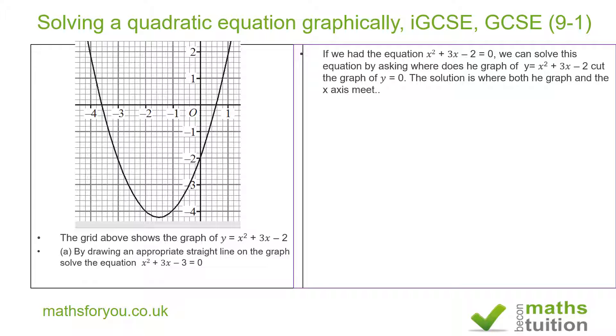But in this case, we are asked to solve the equation x squared plus 3x minus 3 is equal to 0. So we want to get from this to that. So what we then do is to add 1 to both sides because this is an equation. We need to add 1 to both sides because minus 3 plus 1 will give us minus 2 there.